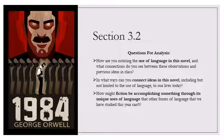How many times he had been beaten, how long the beatings had continued, he could not remember. Always there were five or six men in black uniforms at him simultaneously. Sometimes it was fists, sometimes it was truncheons, sometimes it was steel rods, sometimes it was boots. There were times when he rolled about on the floor, as shameless as an animal, writhing his body this way and that, in an endless, hopeless effort to dodge the kicks, and simply inviting more and yet more kicks in his ribs, in his belly, on his elbows, on his shins, in his groins, in his testicles, on the bone at the base of his spine.